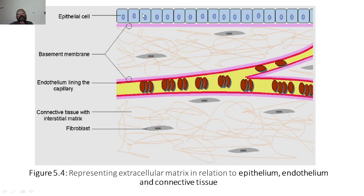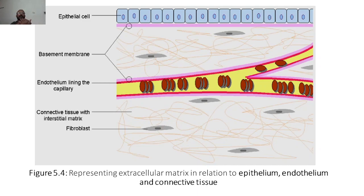The extracellular matrix is represented in relation to epithelium, endothelium, and connective tissues. Epithelial cells are the outer part of cells — for example, on the hand, the cells on the surface are epithelial cells.